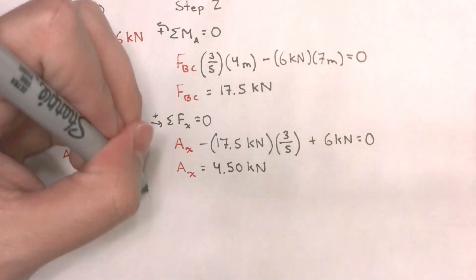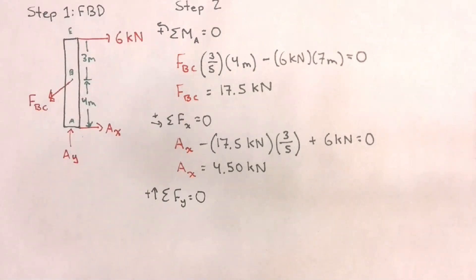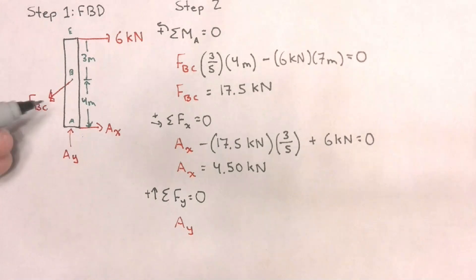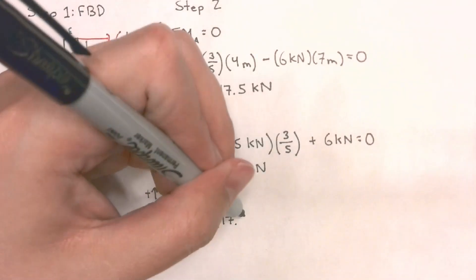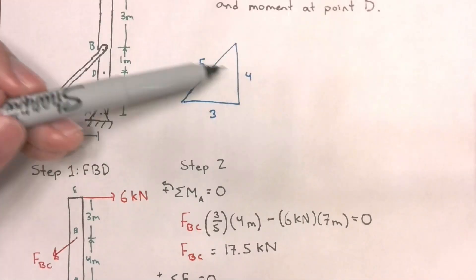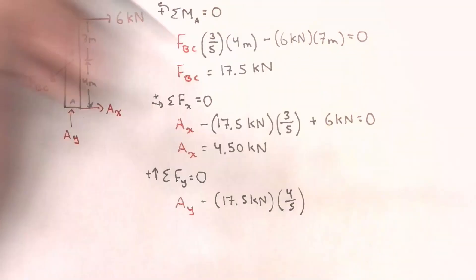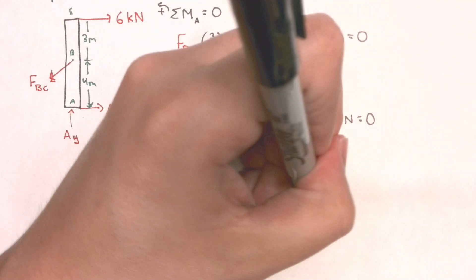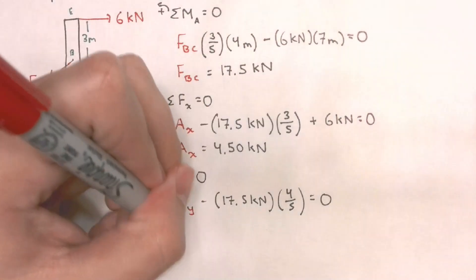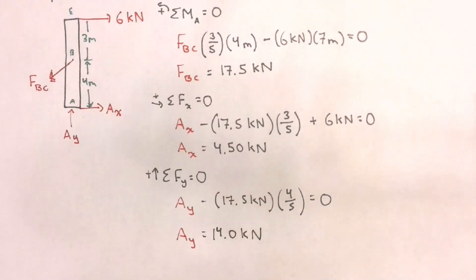Finally, I can take my sum of forces in the y-direction. I have my unknown reaction force AY assumed positive, minus the y-component of force BC: 17.5 kN times 4 over 5. There are no other y-forces in our free body diagram, so this equals zero, which gives us a reaction force in the y-direction of 14 kN. So we've found all of our reaction forces.